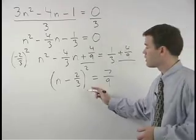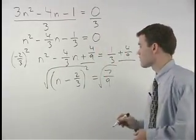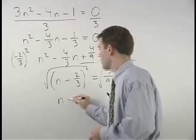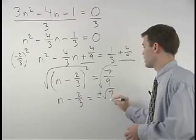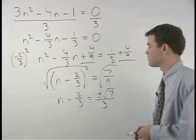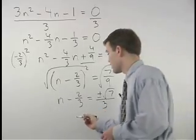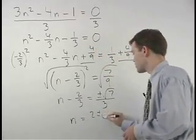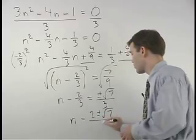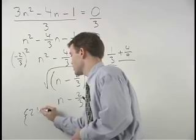To solve for n, we square root both sides, and we have n minus 2 thirds equals plus or minus root 7 over 3. Adding 2 thirds to both sides, we end up with n equals 2 plus or minus root 7 over 3, which we can write in set notation.